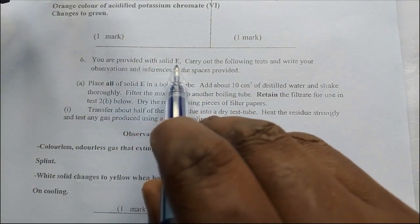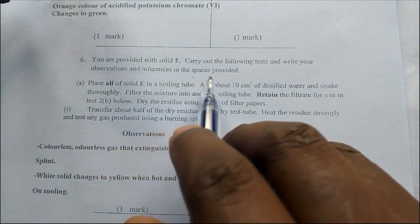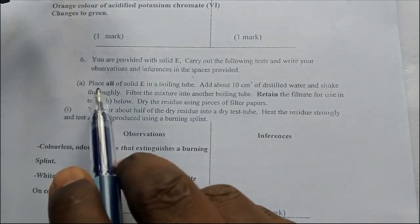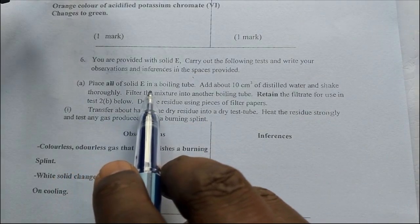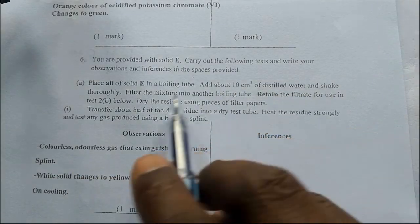You are provided with Solid E. Cut out the following test and write your observations and inferences in the spaces provided. Place all of Solid E in a boiling tube. Add about 10 cm³ of distilled water and shake.